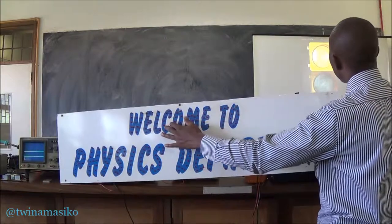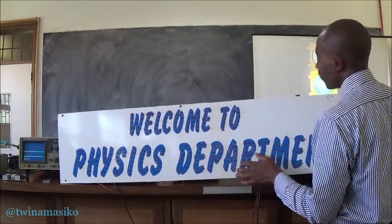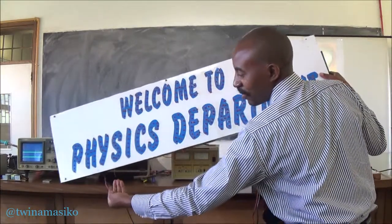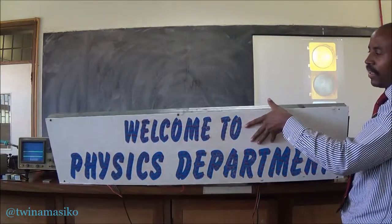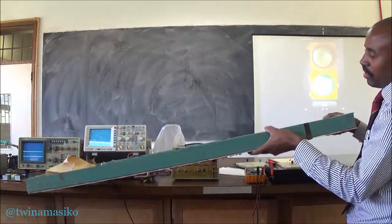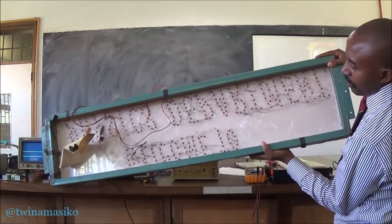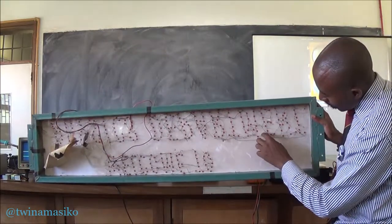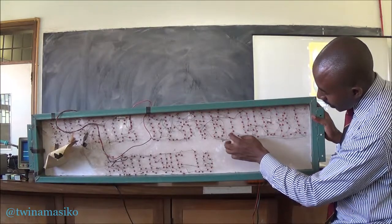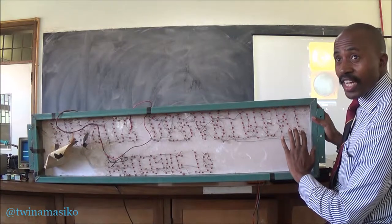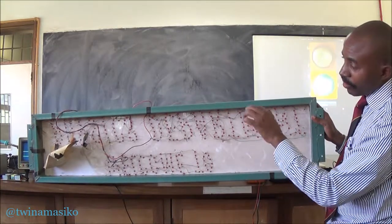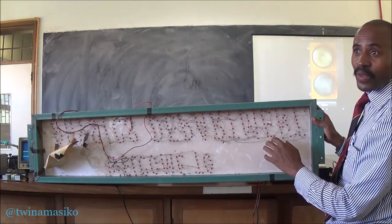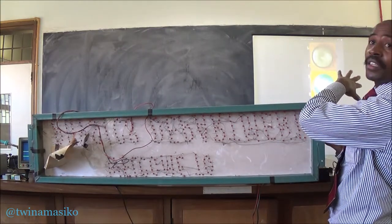Welcome to Physics Department. It is not working because the wires are not connected anywhere — the transformer works. Once you connect the things, the transformer, and give it a supply, you are able to do it. This is what happens behind: each of the LEDs is connected together to make up the whole display. They were all arranged to make one — Physics, Welcome to Physics Department. Just like how those red flags are lighting.